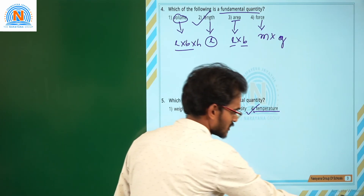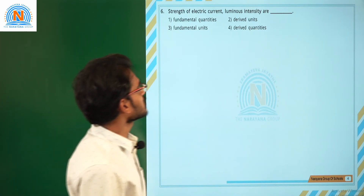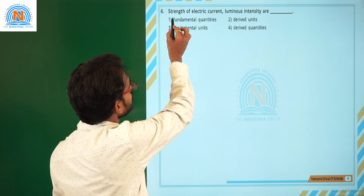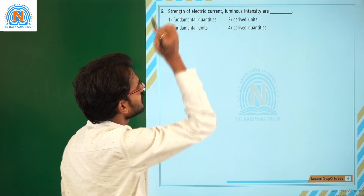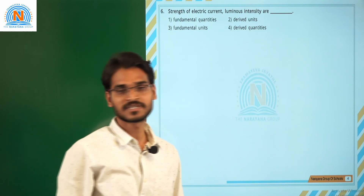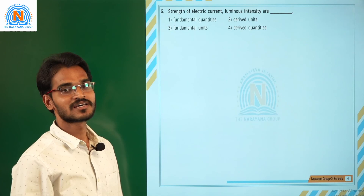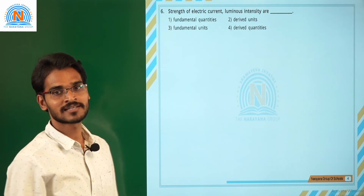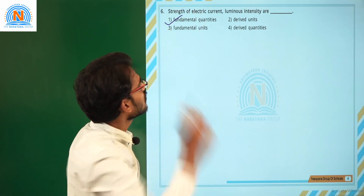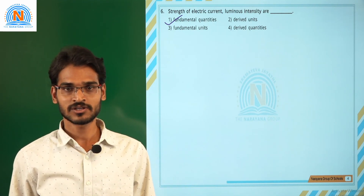Moving to the next question: strength of electric current and luminous intensity are what type of quantities? We already know that strength of electric current and luminous intensity are fundamental physical quantities, because these quantities are independent of all other quantities. So our correct answer is fundamental physical quantities. Thank you, students.